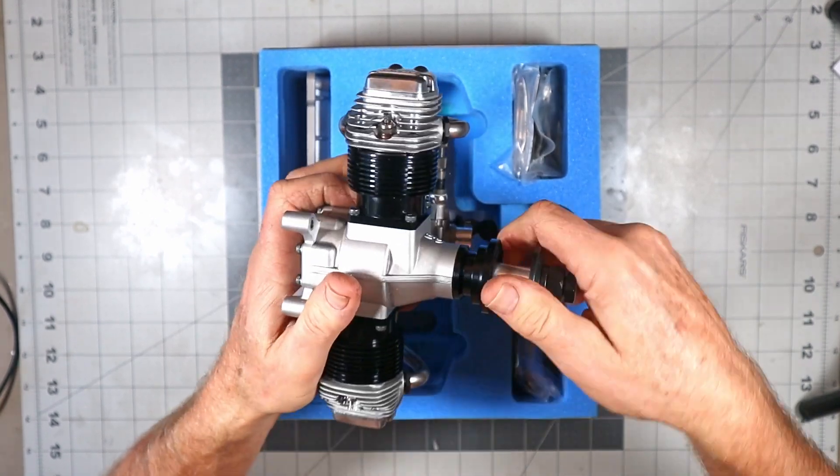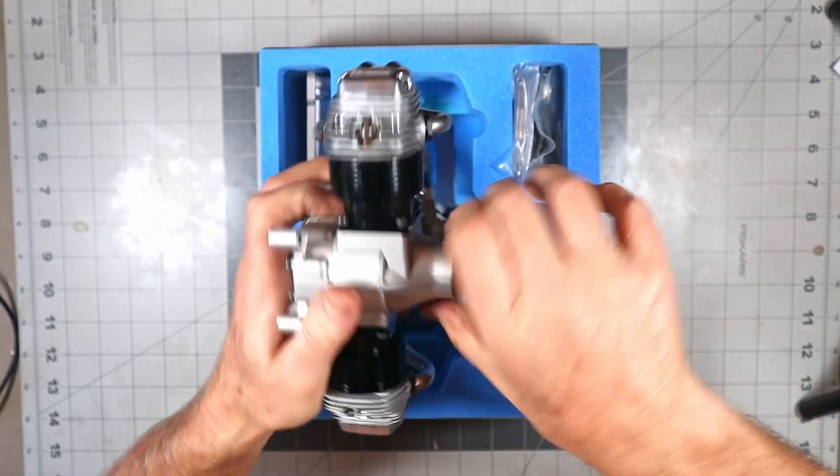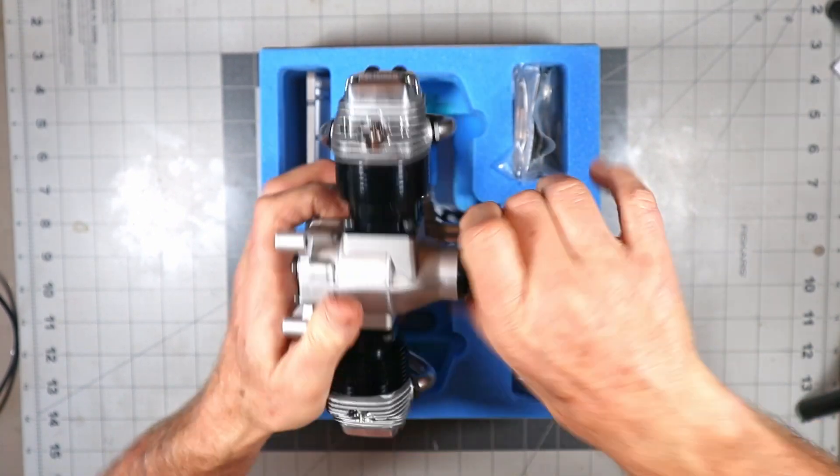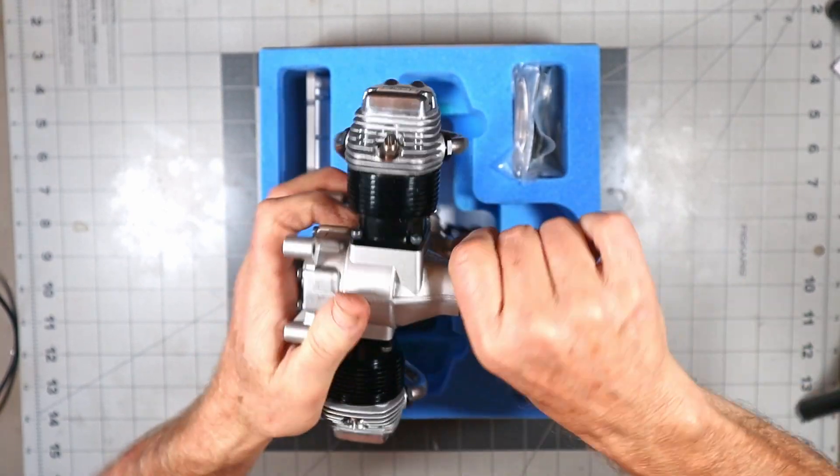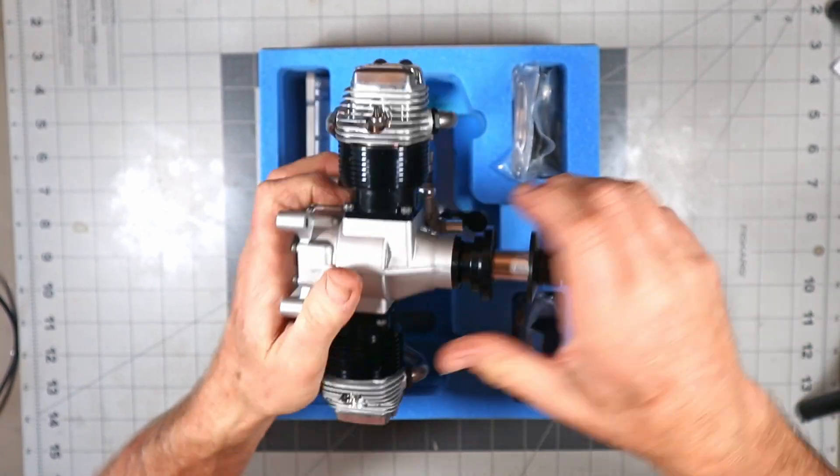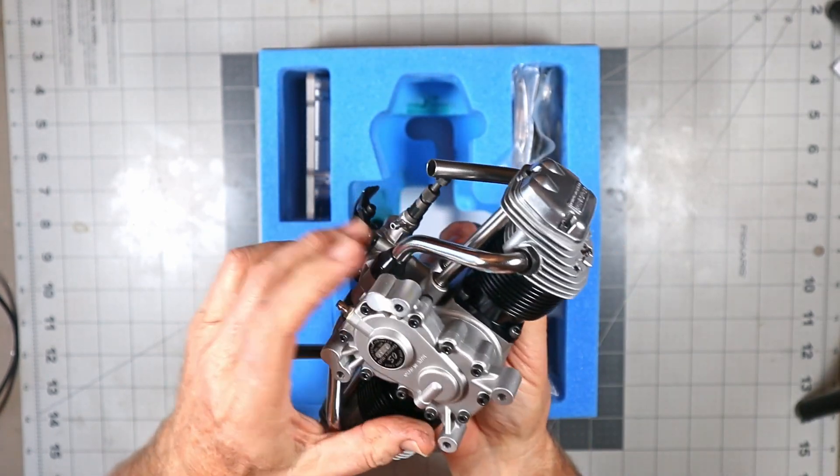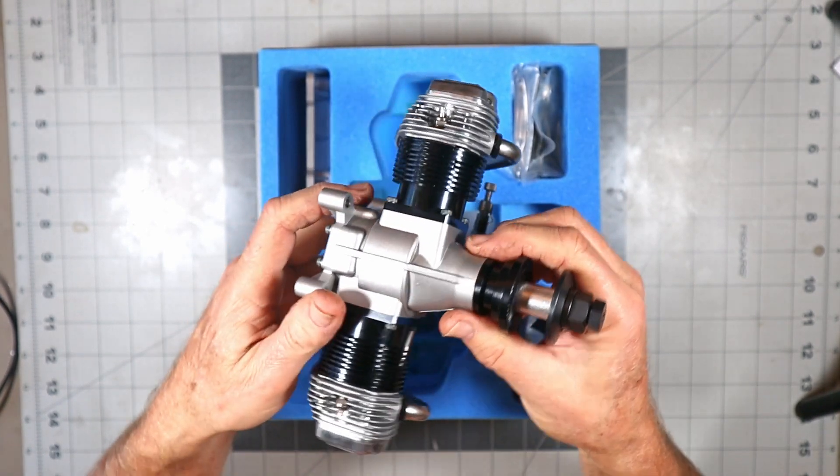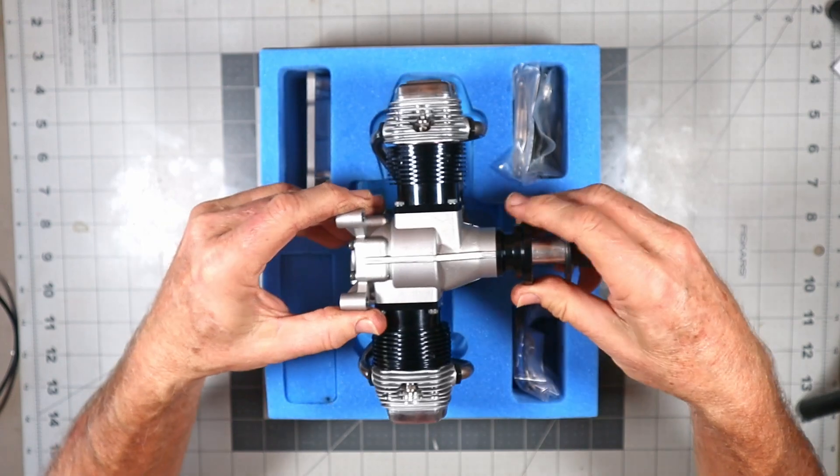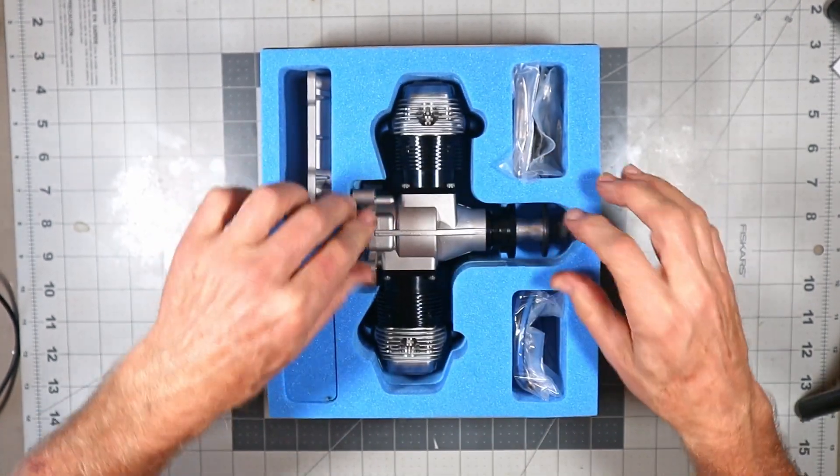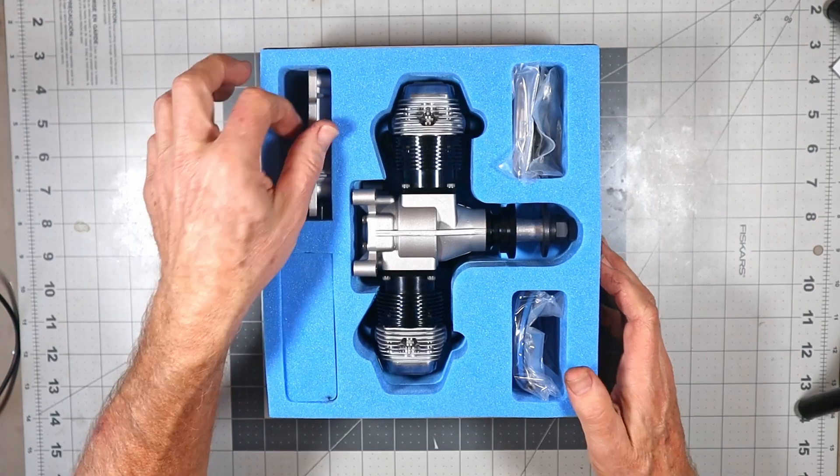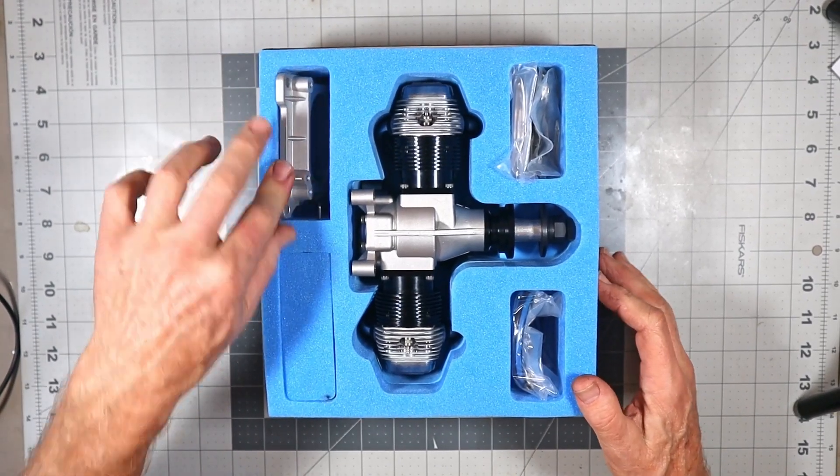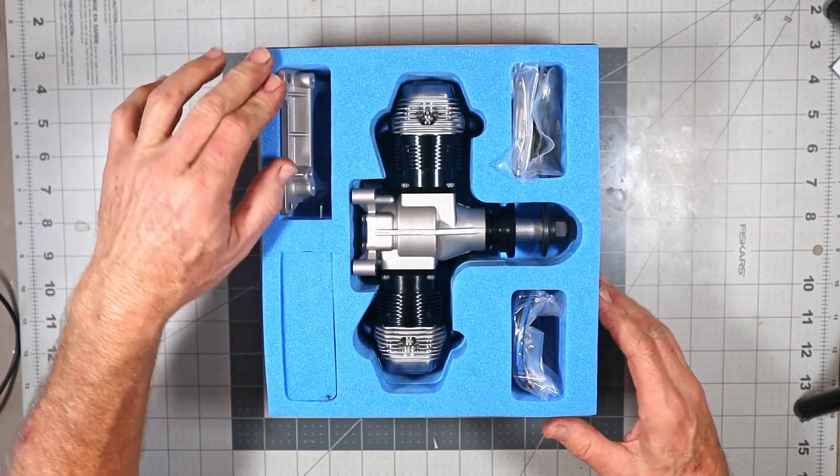It's always been perfect. So anybody that tells me they've got a new-in-box engine that doesn't feel perfectly smooth, or is gummy or notchy - it's not a new-in-box engine. It's been run or somebody's done something to it, guaranteed. That's not how OS operates. When you get a brand new engine from OS, it is perfect, period.